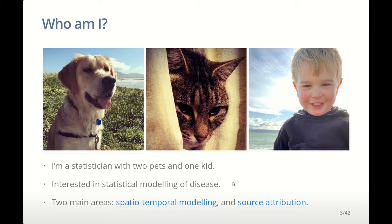I'm a statistician. I have two pets: a mini golden retriever who's about seven, and Chili who is about sixteen. This is my son Sam, who is now four. I'm interested in the statistical modeling of disease, for example in two areas: spatio-temporal modeling and source attribution.